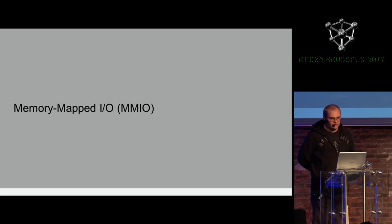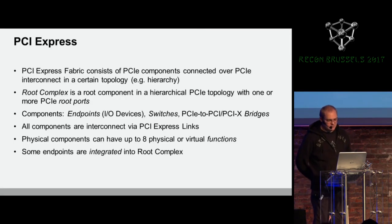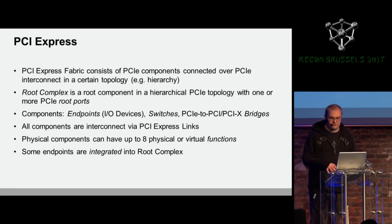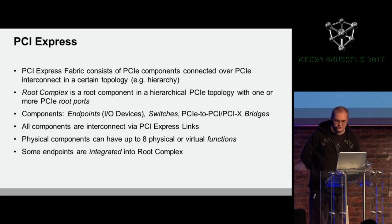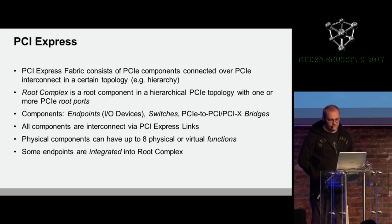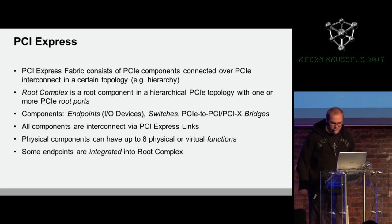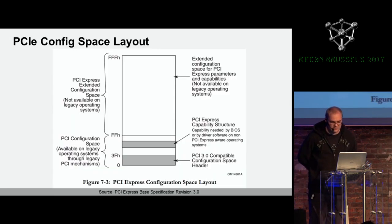A little bit about MMIO, because this bug really relies on the different behavior of MMIO. In x86 systems, to communicate with a device, there is the PCI Express protocol. In this protocol there is a fabric which contains multiple components interconnected in certain topologies. In this topology there is a root complex with multiple ports, and there are endpoints, switches, and bridges — all connected via PCI Express links. Every physical component has up to eight virtual physical functions, and some may be integrated into the root complex. This protocol allows talking to the device and sending DMA and so on.